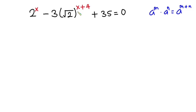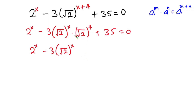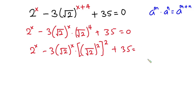So this equation over here could also be written as 2 to the power x, minus 3, into the square root of — 2 to the power x times 2 to the power 4 — plus 35, equals 0. We can write this as the square root of 2 to the power x, squared, raised to the power 2 again, plus 35, equal to 0. So the square will cancel the square root.